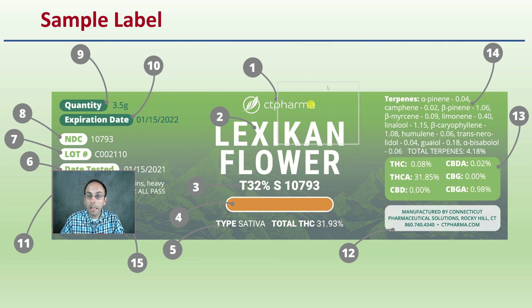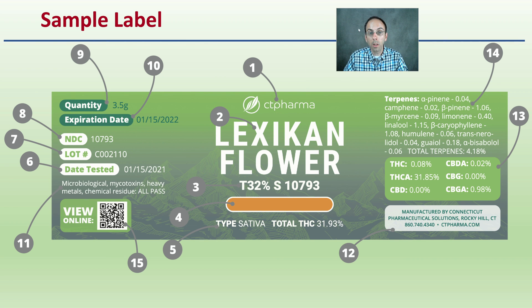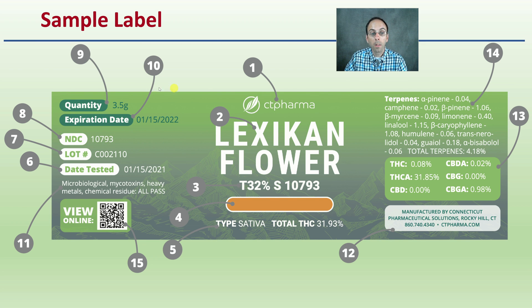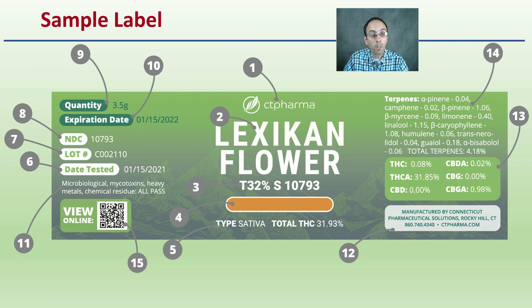Here's just an example of a product label. This one is clearly labeled with different parts, and I'm going to go through and break down each of these 15 individual parts in more detail. There is a lot of information presented in a very small space very efficiently, if you know how to read it.